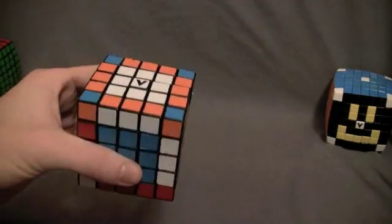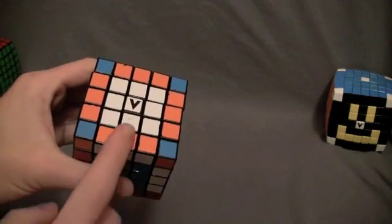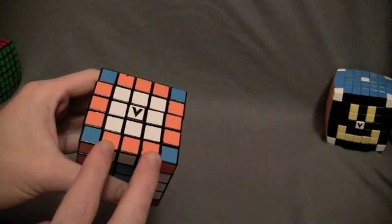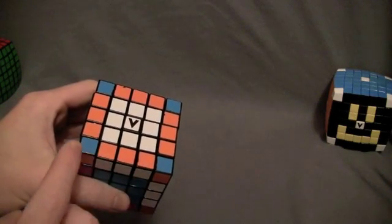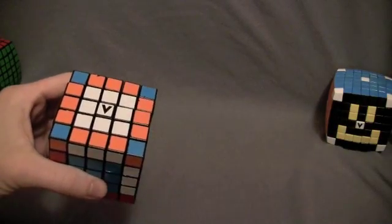Then there's two different types of edge pieces. There's the center edge piece, or the middle edge piece. And then there's the two wings, or outer edge pieces. And then the corners are just like normal three by three.